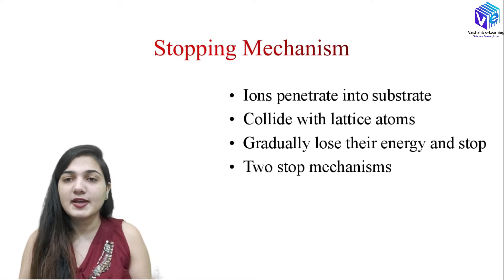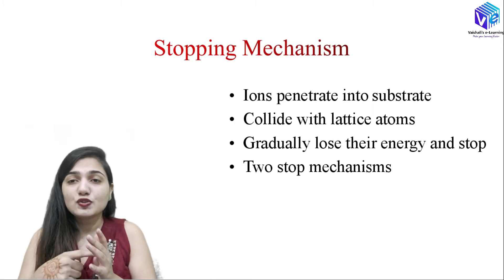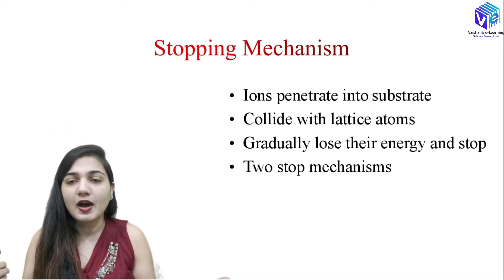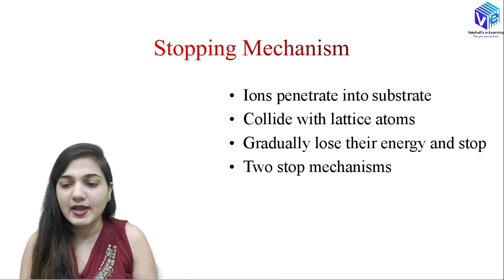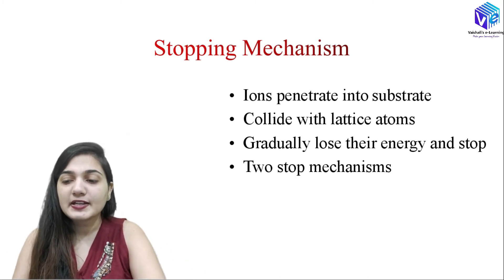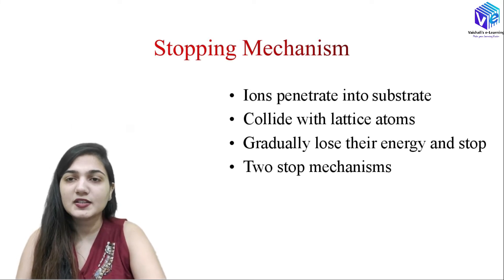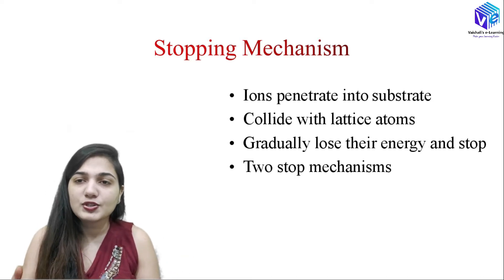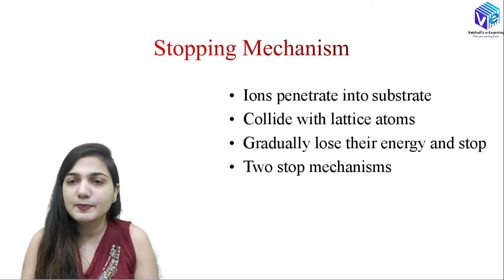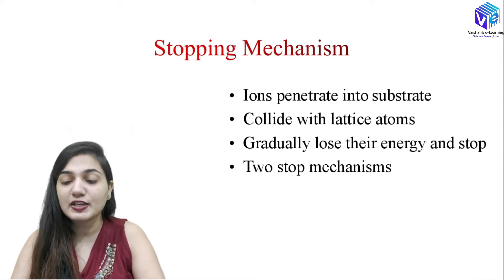Coming to the stopping mechanism. When ions come and hit the substrate surface, they stop inside the wafer. The ions penetrate into the substrate and collide with the lattice atoms. Due to these collisions they lose energy, which reduces their speed, and this is how they ultimately stop after many collisions — gradually losing energy until they stop.